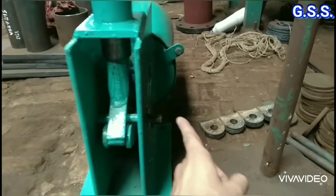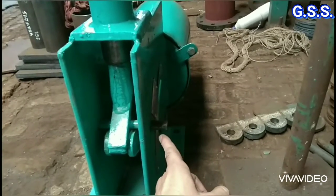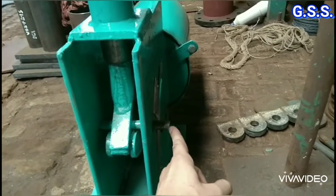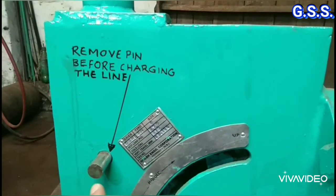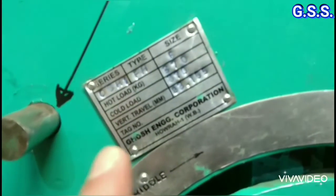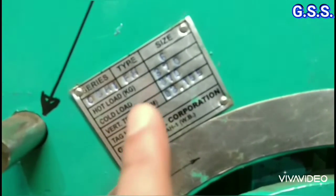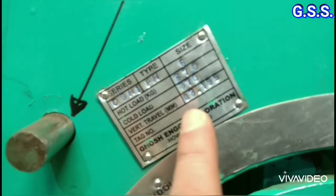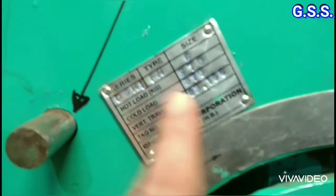The bell crank lever is kept in locked condition by a pin or rod which should be removed at the site after installation and testing of the line. Spring data like cold preset load, hot load, vertical movement, etc., are indicated on the spring.